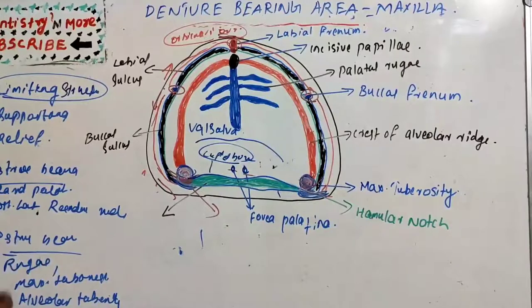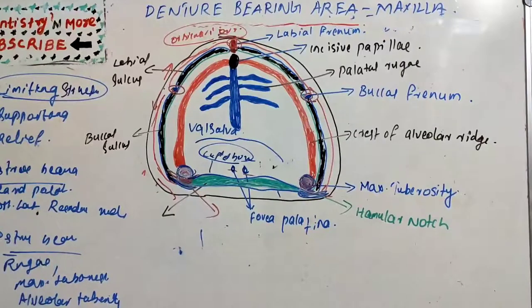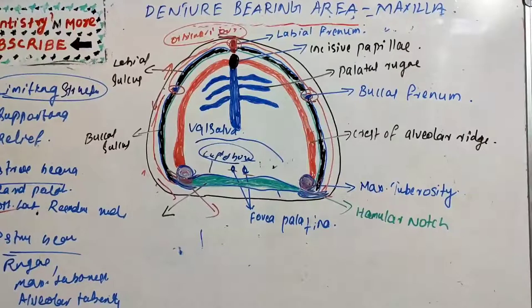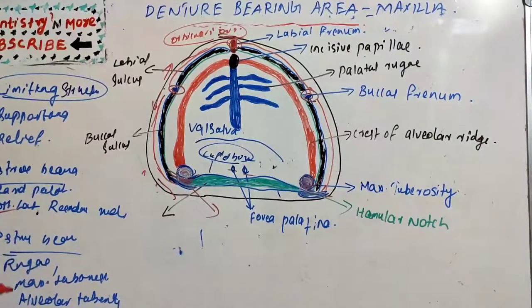The posterior lateral slopes of the residual alveolar ridge are lined by thick stratified squamous epithelium. They resorb rapidly following extraction and continue to resorb throughout life at a reduced rate. Vertical masticatory forces during functional activities fall on the denture and are transmitted posteriorly, so these posterior lateral slopes bear the force, making them primary stress-bearing areas.